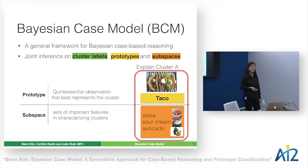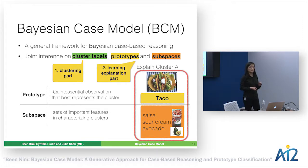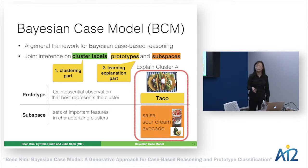This is how BCM provides explanations. Technically, prototypes are defined as the quintessential observation that best represents the cluster, and subspaces are the set of important features that characterize the clusters. BCM performs joint inference on all of these — clustering, prototypes, and subspaces — all at the same time.